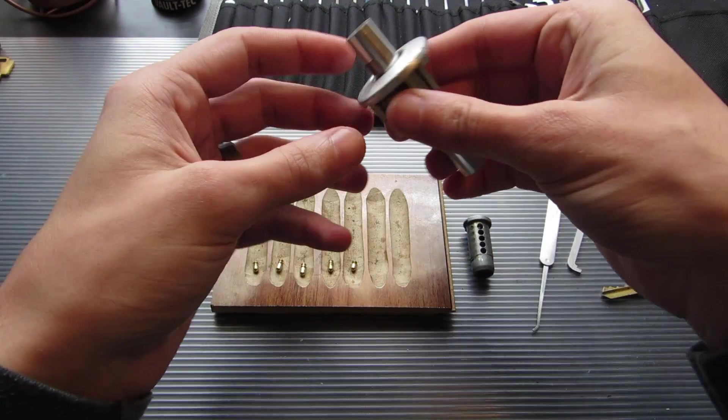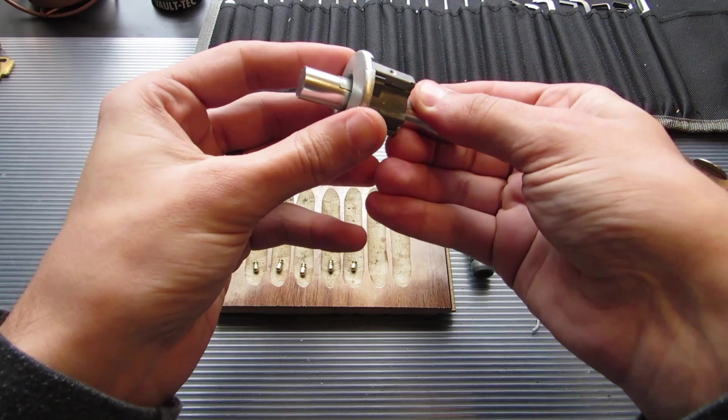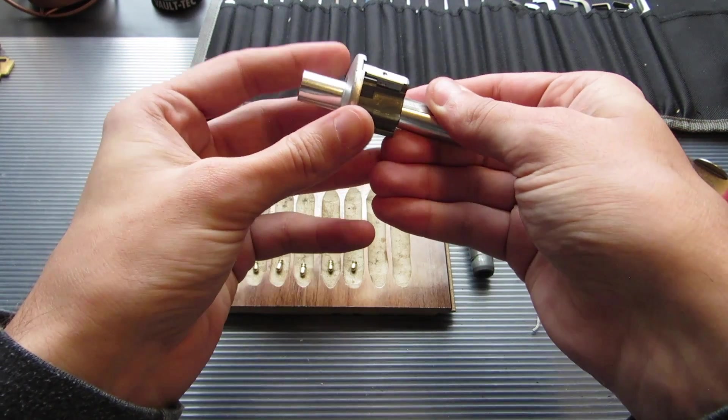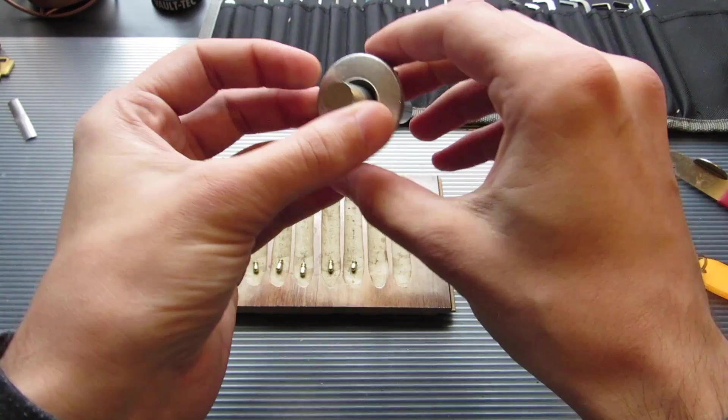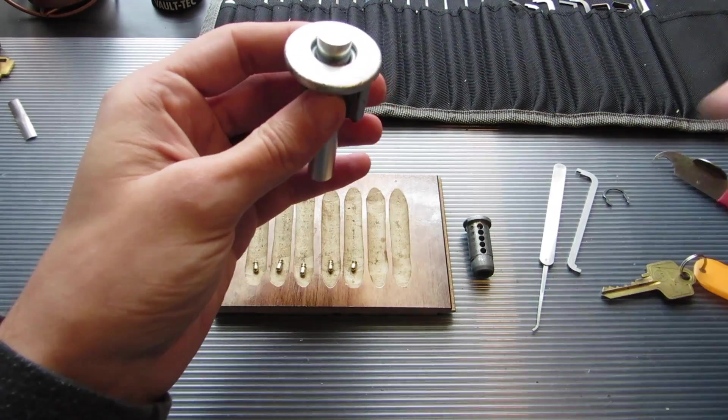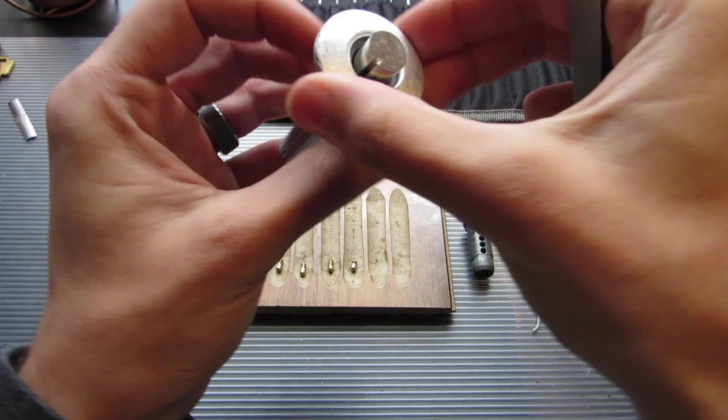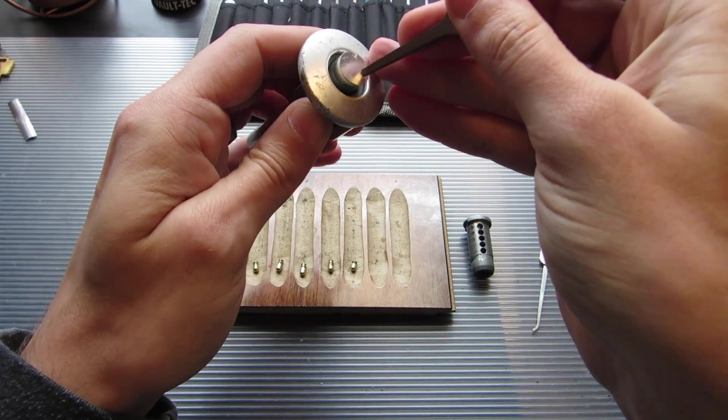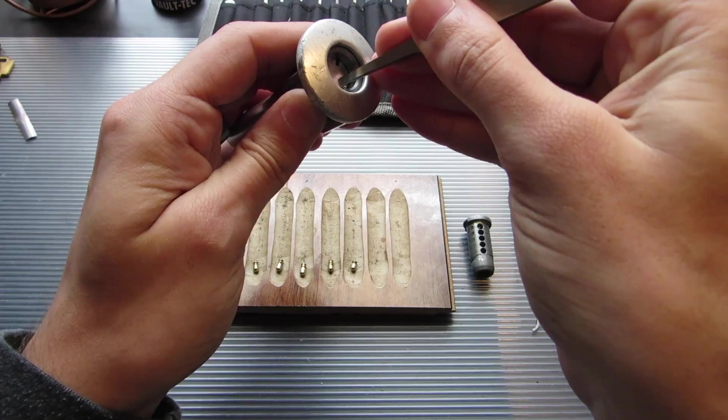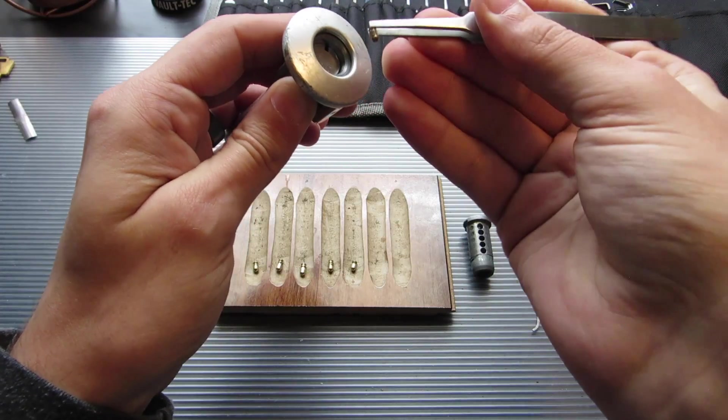Four is serrated. And five is a really deep spool. And that's really nice. Let's get that shim pin out of there, as West Coast Picks called it.